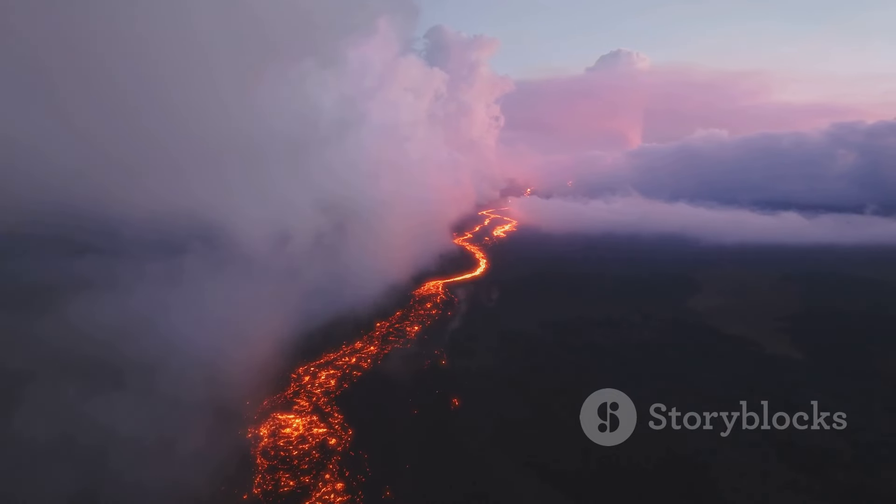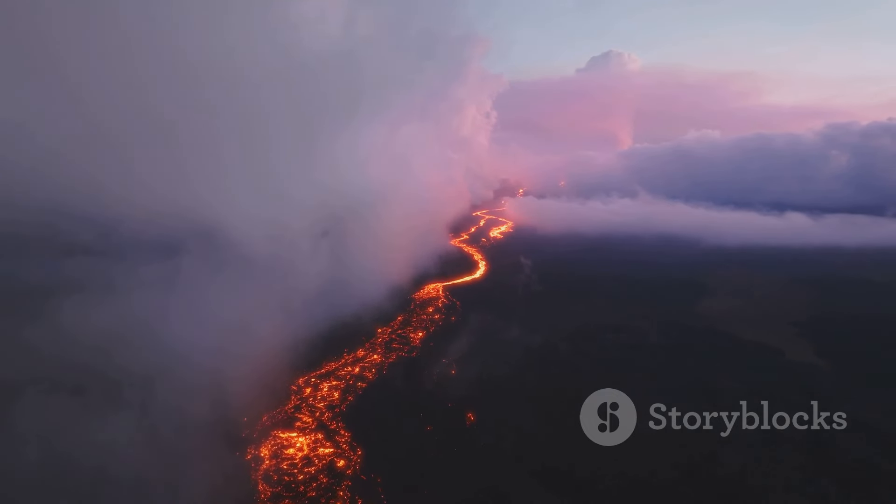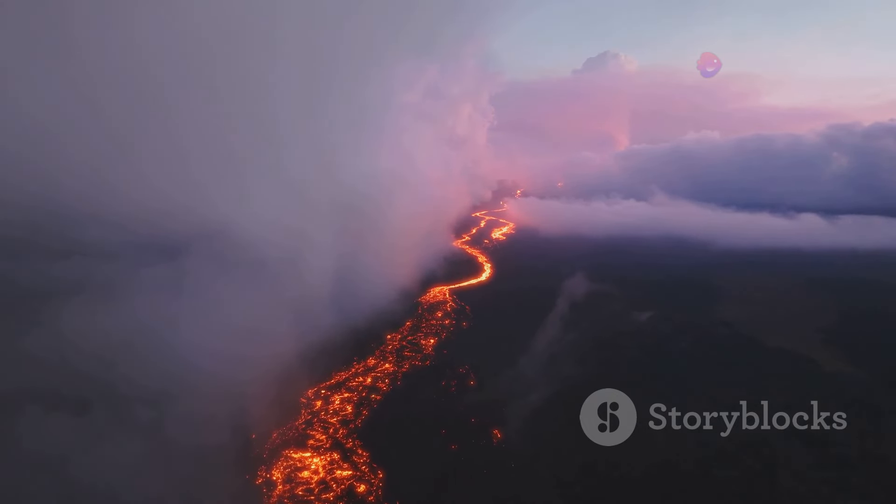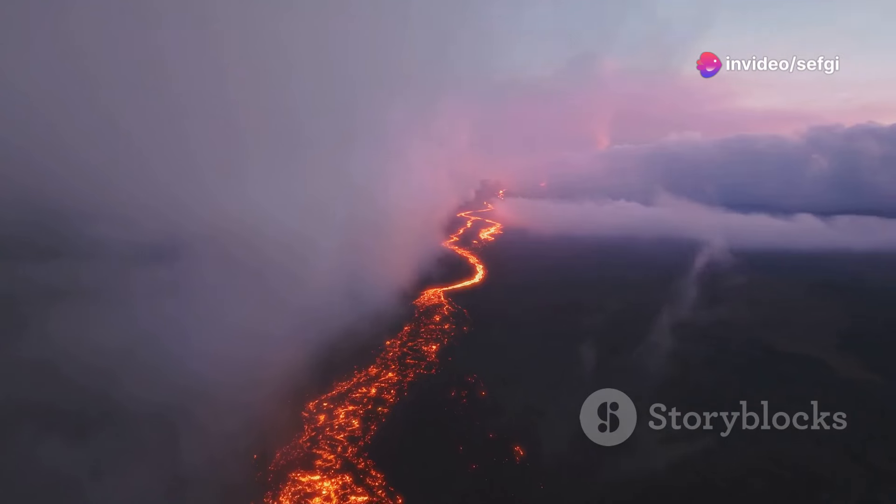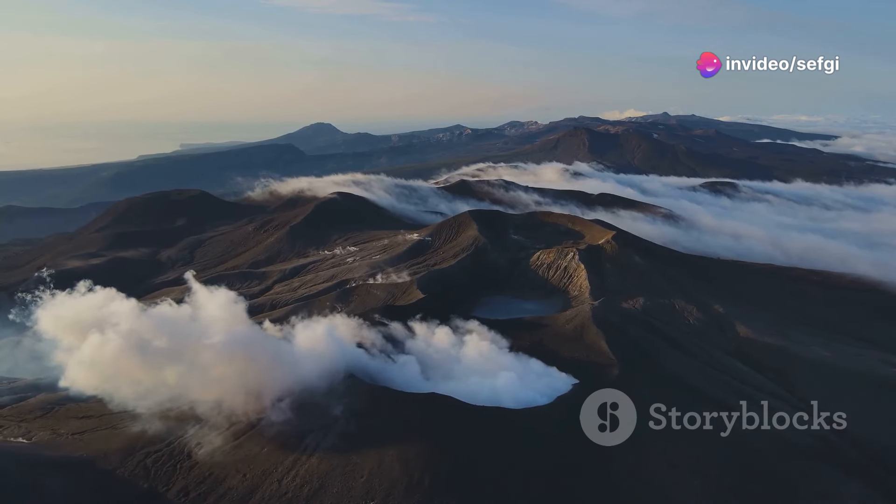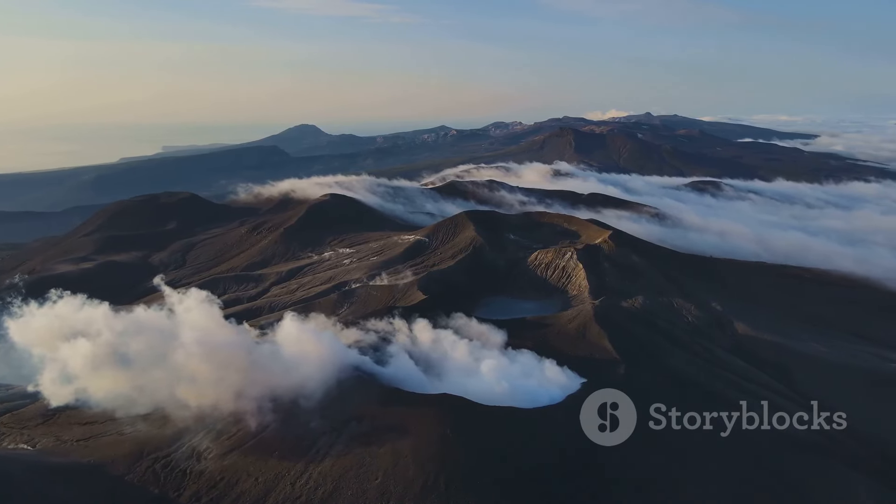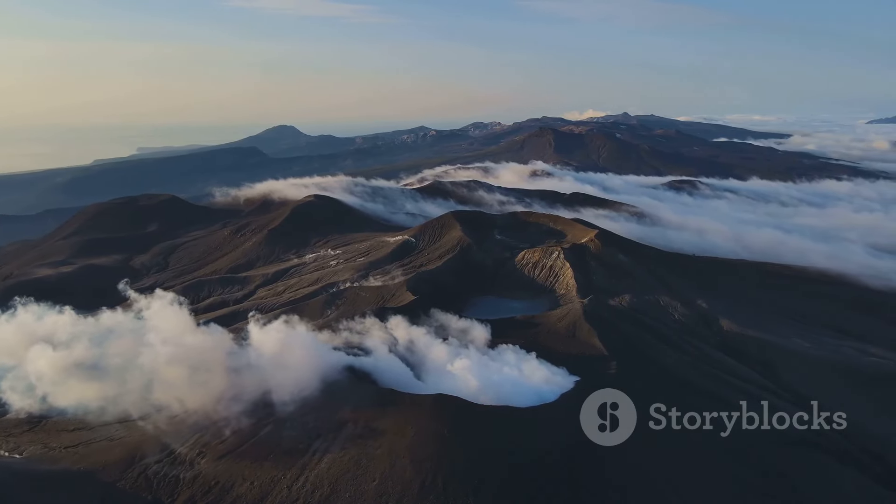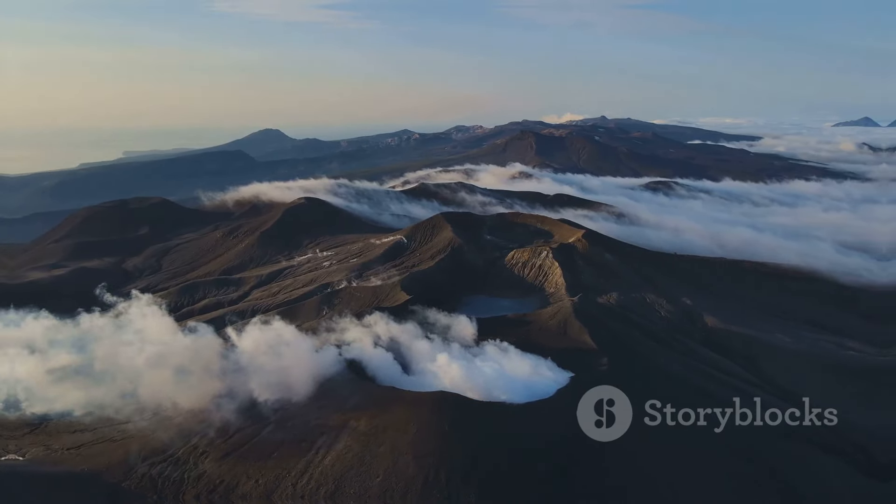In 1986, Lake Nyos erupted, claiming the lives of over 1,700 people. Lake Kivu, straddling the border of Rwanda and the Democratic Republic of Congo, is 20 times larger than Lake Nyos and sits on a volcanic rift, making it a potential threat to 2 million people living nearby. So not all lakes are as peaceful as they seem.